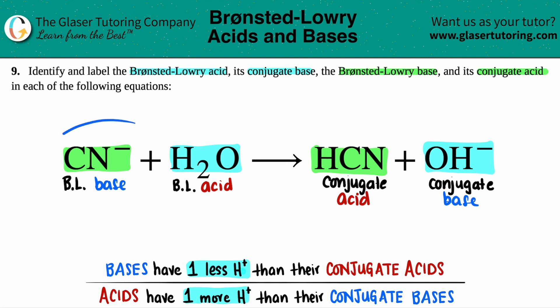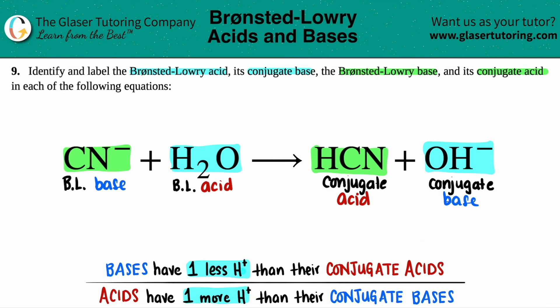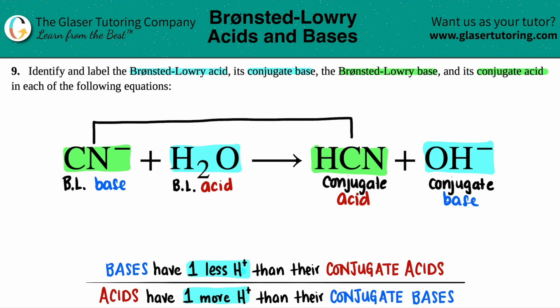You'll notice we have only one base and one acid on each side of the equation. If you accidentally end up with an acid plus an acid on one side, go back — the same applies to base plus base. You can only ever have one acid and one base on one side of the equation. Now I'll draw the pairs — the greens go together and the blues go together.